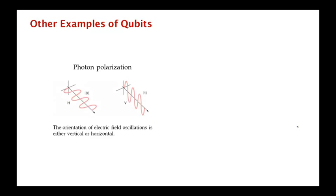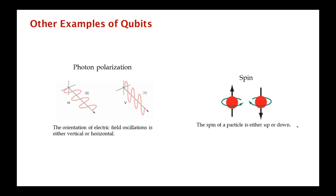Let me give you a couple of other examples of qubits. It turns out that photons — particles of light — have a qubit associated with them, which is called the polarization, roughly the orientation of the electric field oscillations. We can think of these oscillations as either being horizontal or vertical, and that corresponds to a qubit. The spin of a particle like an electron is a quantized version of its angular momentum, and it also forms a qubit where the spin is either pointing up or down.